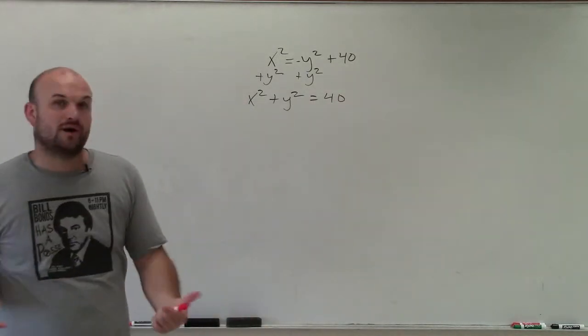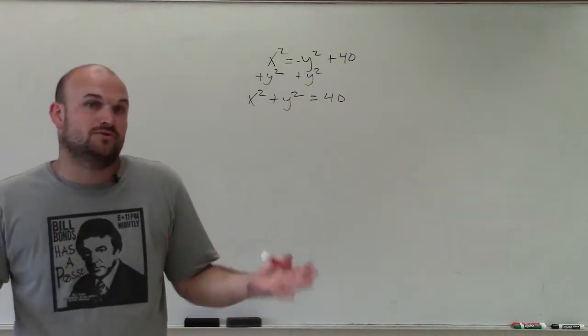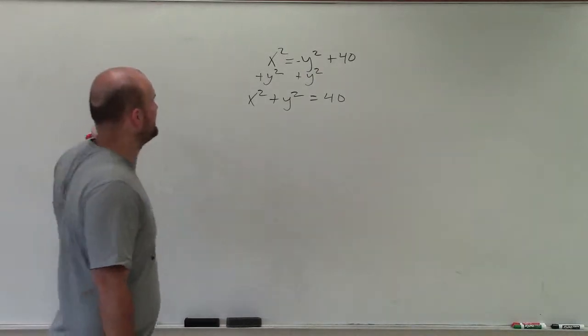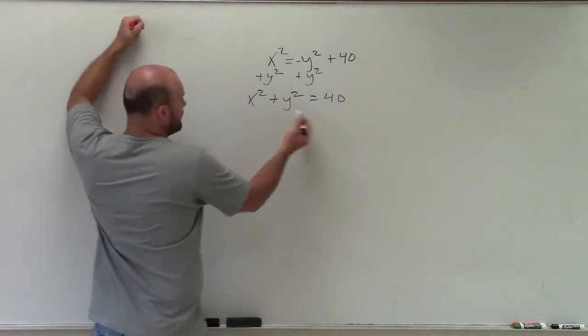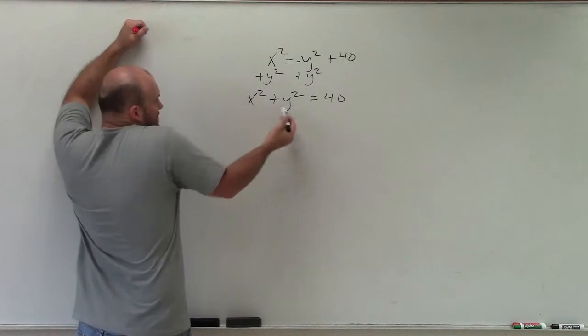The next thing I notice is it's not set equal to 1. When graphing ellipses, we've got to have them set equal to 1. So I would divide by 40 on both sides. If I divide by 40 on both sides, my a and my b are going to be equal,